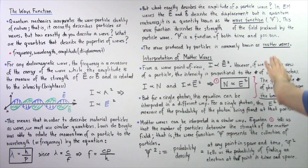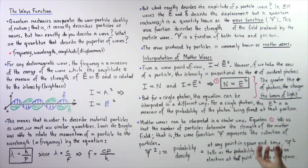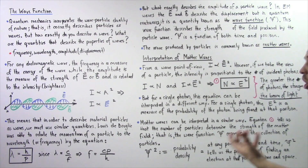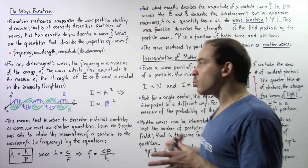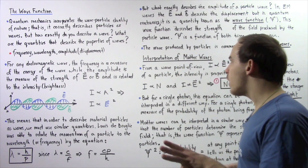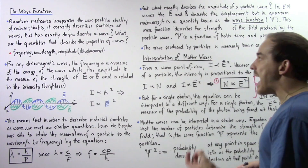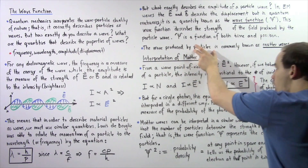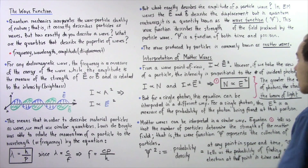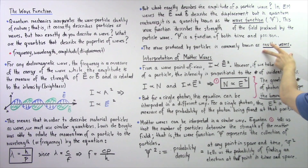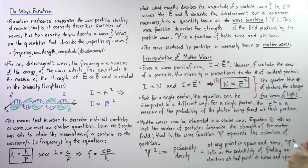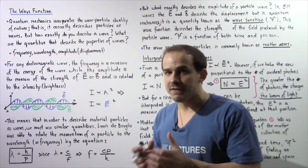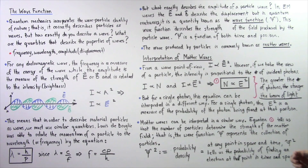We define a matter wave to represent the wave produced by a particle — so instead of calling it a particle wave, we call it a matter wave. A matter wave consists of matter fields, and the wave function basically describes the strength of the matter fields of these matter waves.